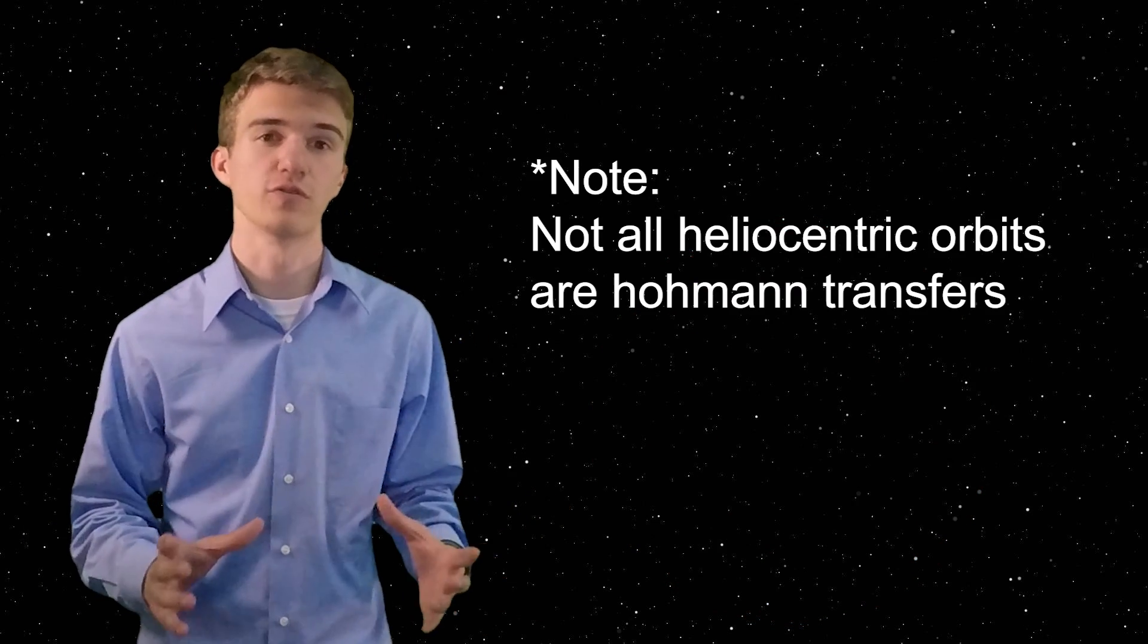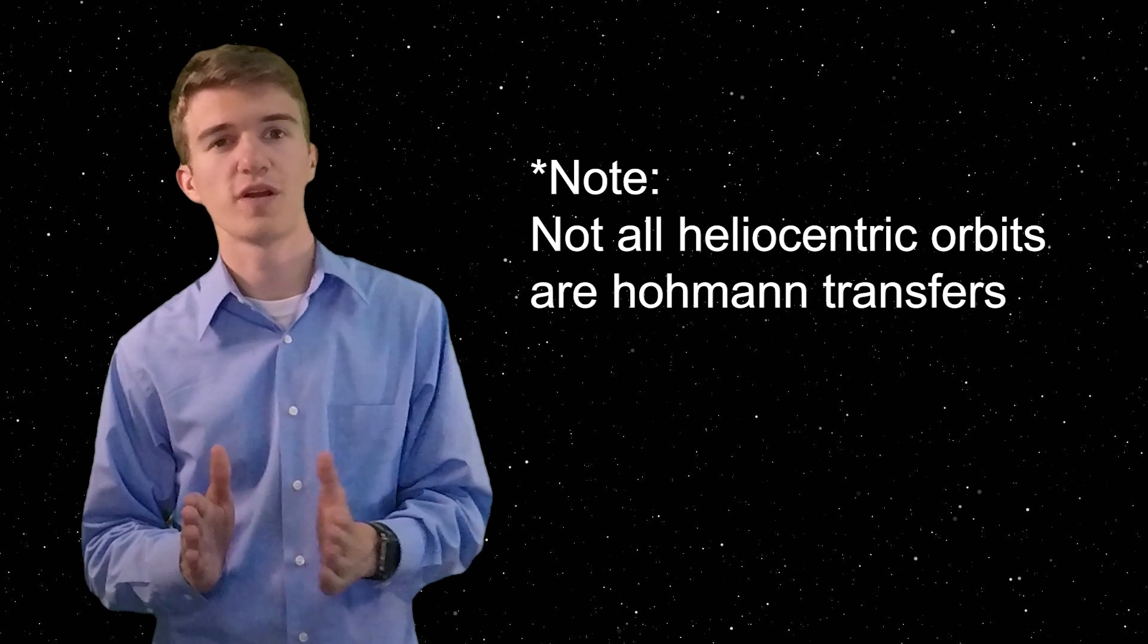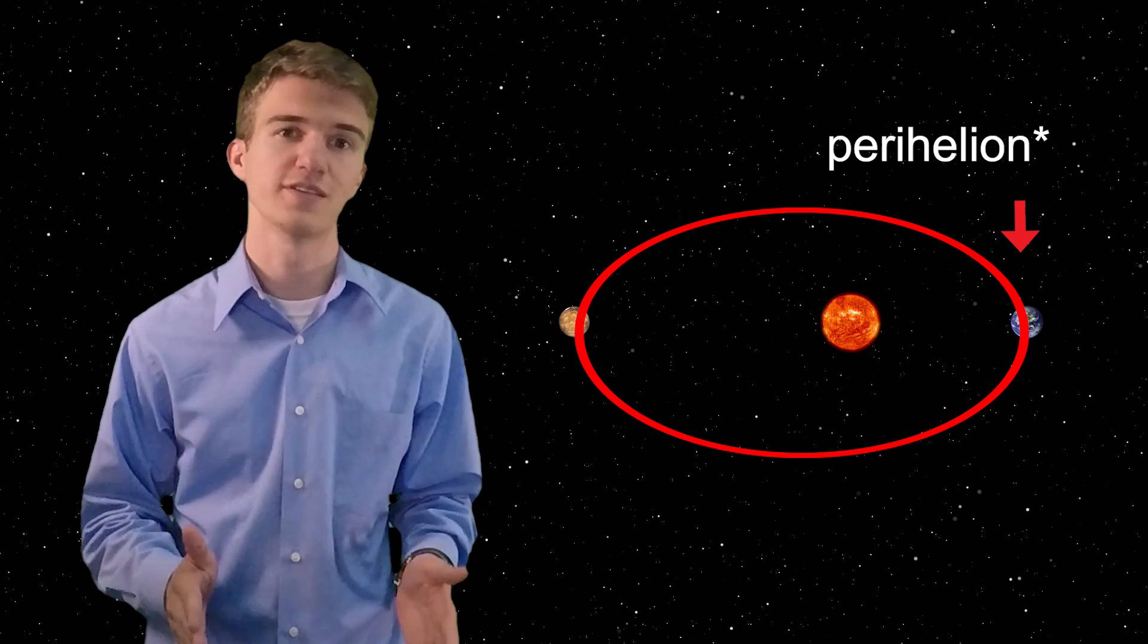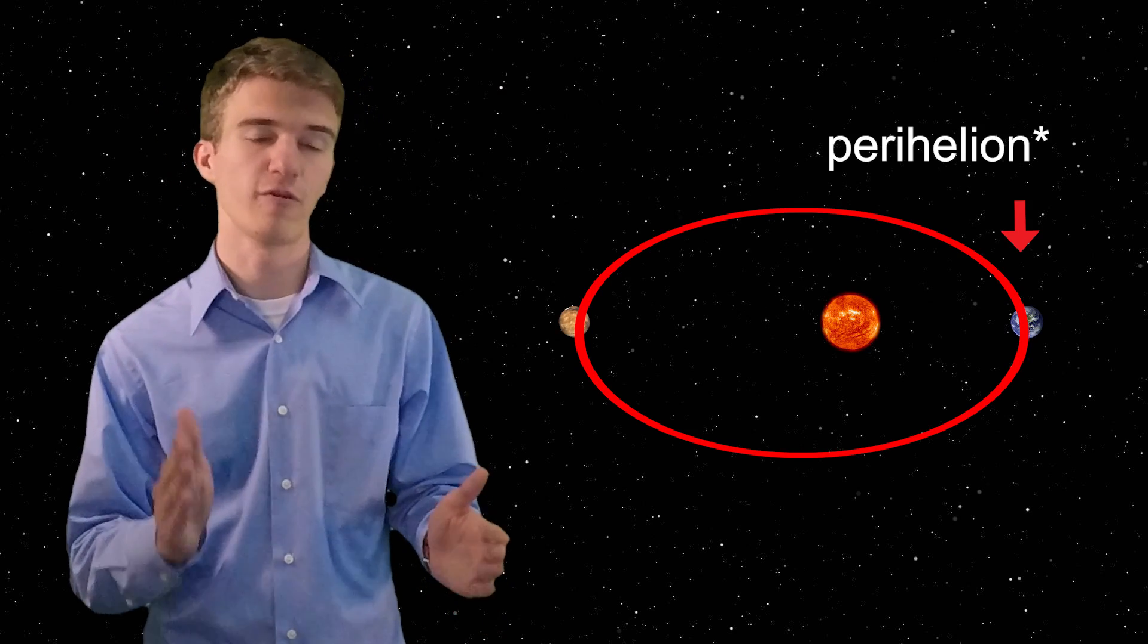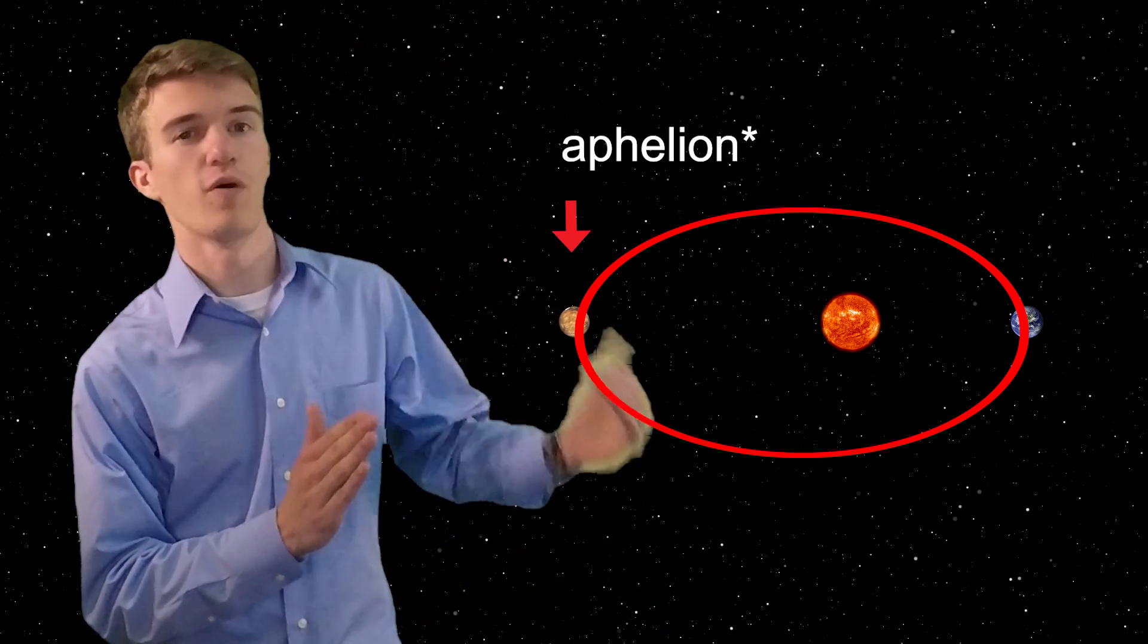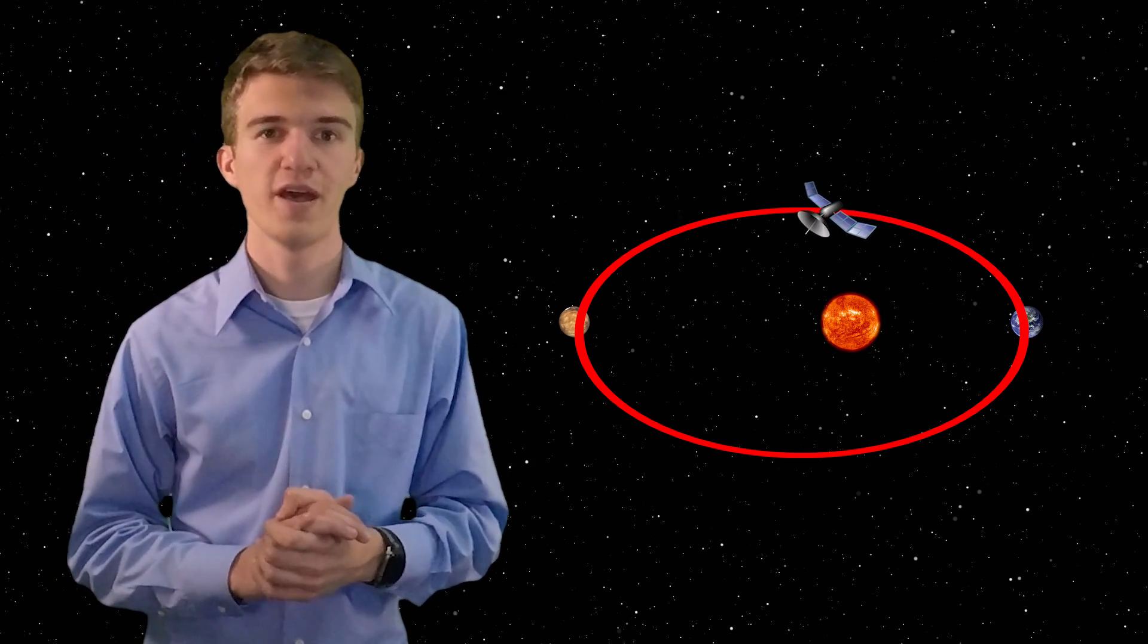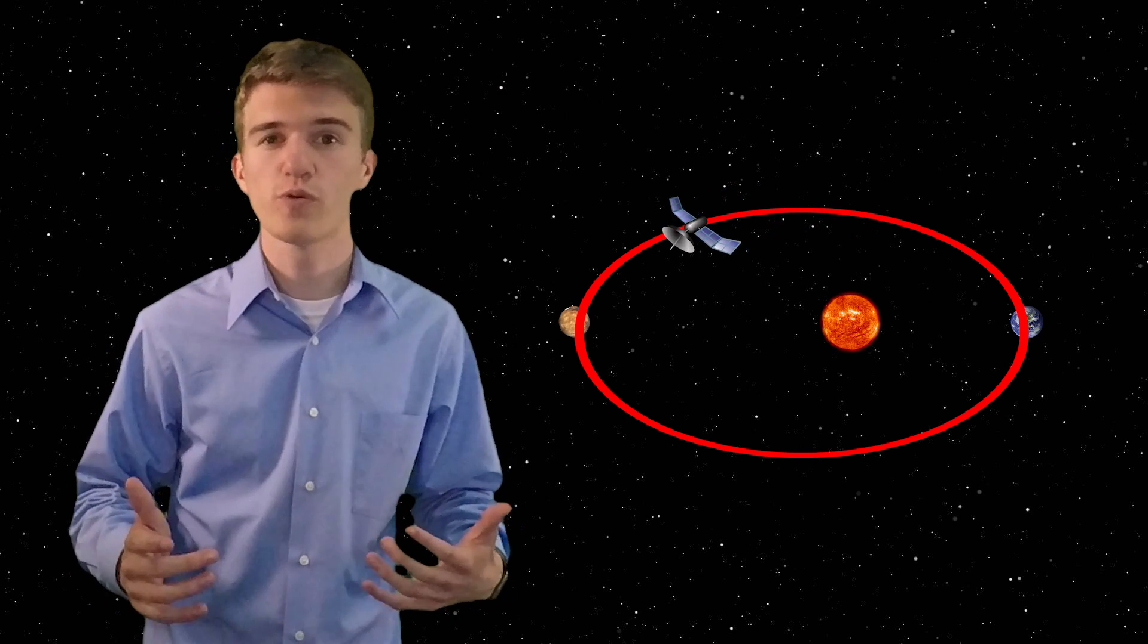And this orbit is really special because it's called a Hohmann transfer. Now, this Hohmann transfer has a perigee or the closest distance to the sun is at a radius that the Earth is. And the farthest distance from the sun is at a radius of what Mars is, meaning that as you transfer throughout that orbit, you'll slowly be drifting away from the sun and slowly be drifting towards Mars.